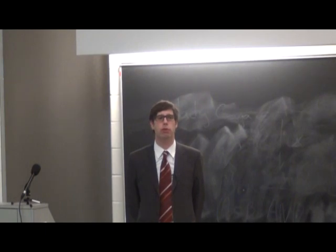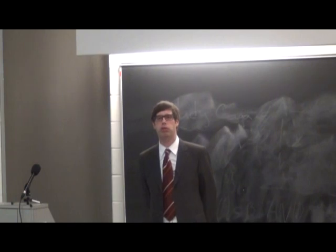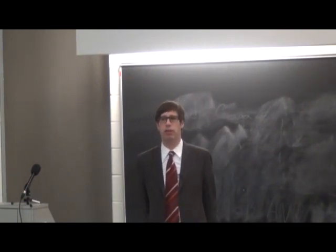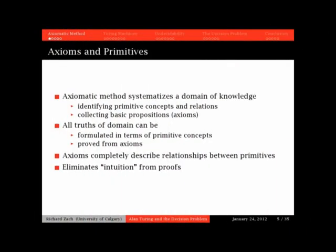The axiomatic method, for anyone who's studied the history of science or the philosophy of science, has a very long history. It goes back to 300 B.C., to Euclid's Elements. It was the first to set down a system of axioms. In the case of Euclid, it was an axiom about geometry.